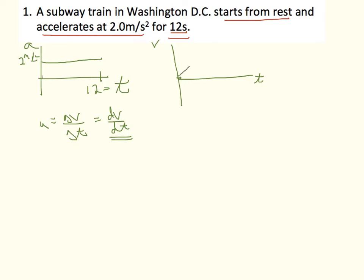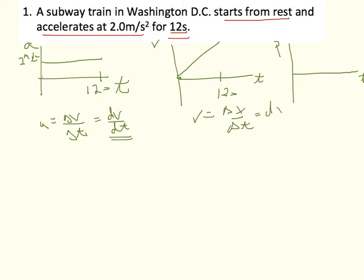On the velocity graph I start at zero and draw a constant positive slope up to 12 seconds. For the position graph, I use the fact that velocity is the change in position over the change in time, or the derivative of position.